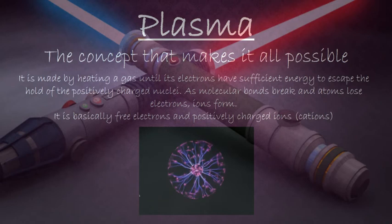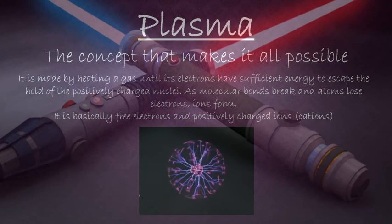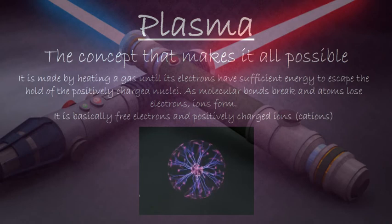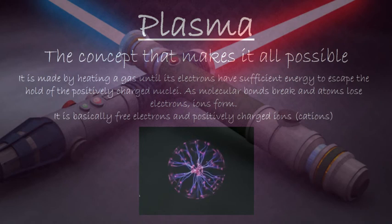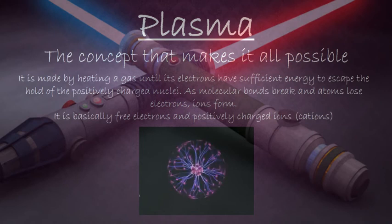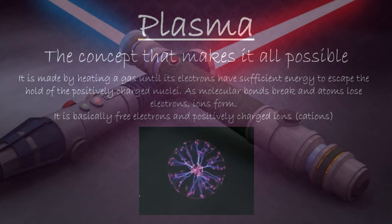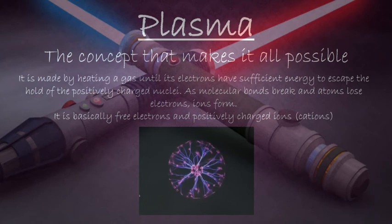Now we will take a look at the fourth state of matter, which is also known as plasma. Plasma is made by heating a gas until its electrons have sufficient energy to escape the hold of the positively charged nucleus. As molecular bonds break and atoms lose electrons, ions are formed.